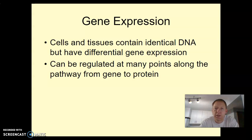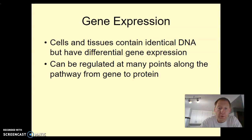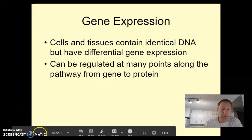Gene expression in eukaryotic organisms is a little bit complicated. We have many different types of cells in our bodies, and what is strange is that they all contain exactly the same DNA. It's a matter of what genes are turned on in the cell that makes a cell act the way that it does. Understanding how this works is incredibly important and incredibly complicated — there are people who spend a lifetime trying to figure this out, and there are many different points along that path where you can regulate it.